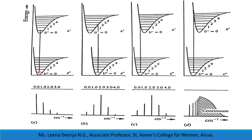The probability of finding the atom at V double-dash equal to 0 is at the equilibrium position. So, starting from this equilibrium position, it will reach another equilibrium position at the V dash equal to 0 level. Therefore, this transition will be of maximum intensity. In the spectral lines, we can see that the 0,0 transition will be of maximum intensity.